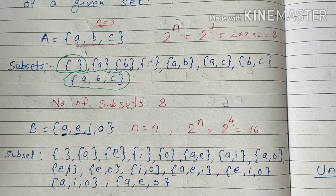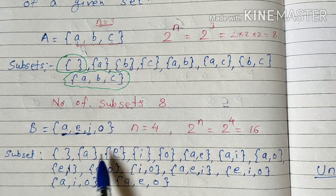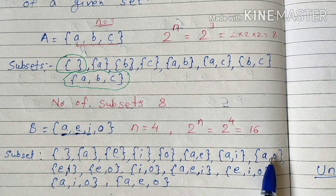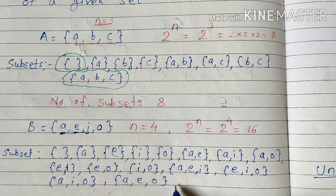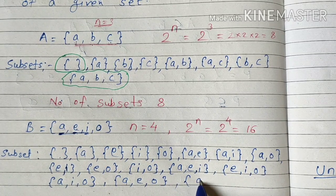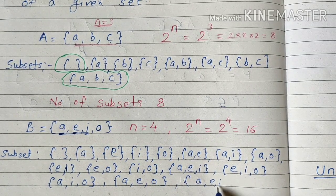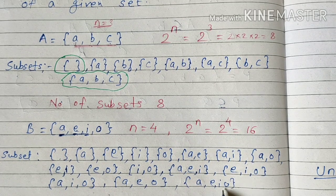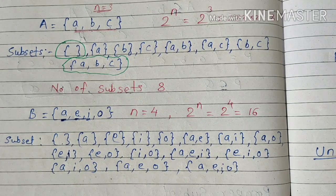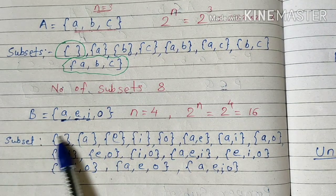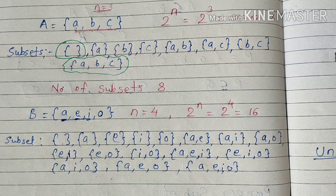So see how many sets we have done: one, two, three, four, five, six, seven, eight, nine, ten, eleven, twelve, thirteen, fourteen, fifteen, and last one is itself. Like this we have the sixteen subsets.